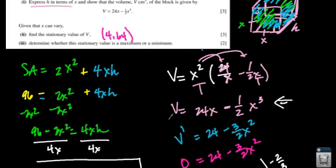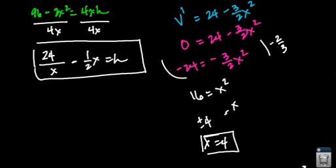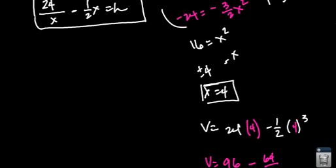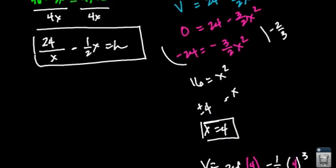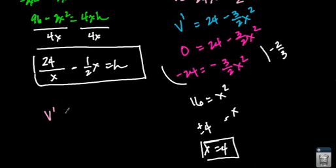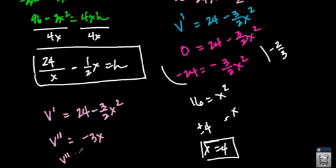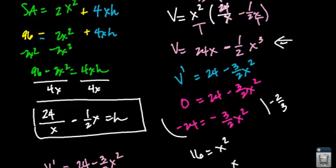Now we determine whether the stationary value is a minimum or maximum. I'll use the second derivative test — this is a test for concavity. The second derivative is −3x. Substituting x = 4 gives −12, which is negative, meaning the curve is concave downward at this point. Therefore, the stationary value is a maximum.